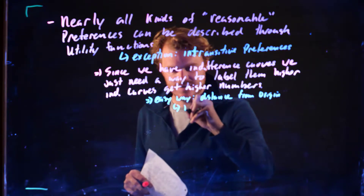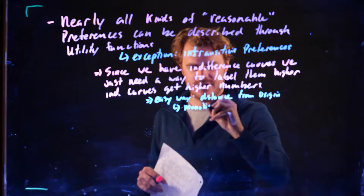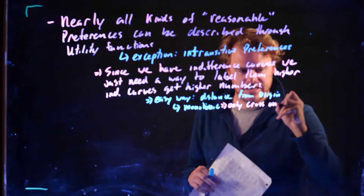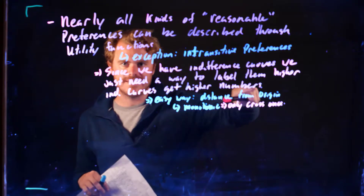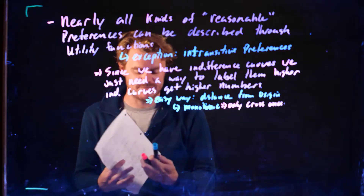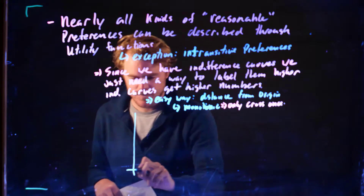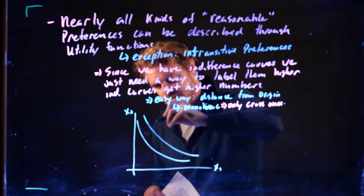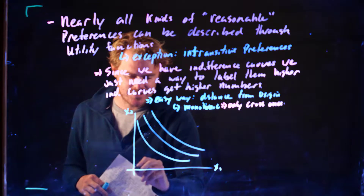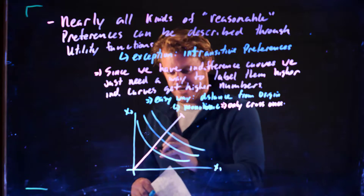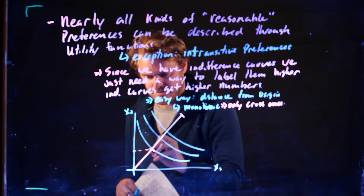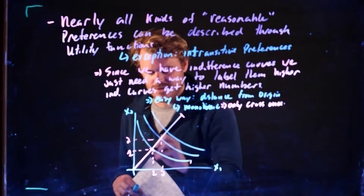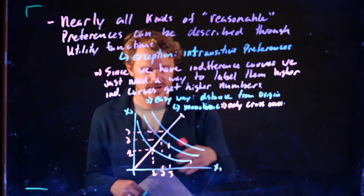If preferences are monotonic, a line from the origin is only going to cross each indifference curve once. So if we have good 1 and good 2, one way to label these different indifference curves is to start with a straight line from the origin as a measure of distance. The first indifference curve is 1 away, so we label it 1; the next is labeled 2, then 3, and so on.